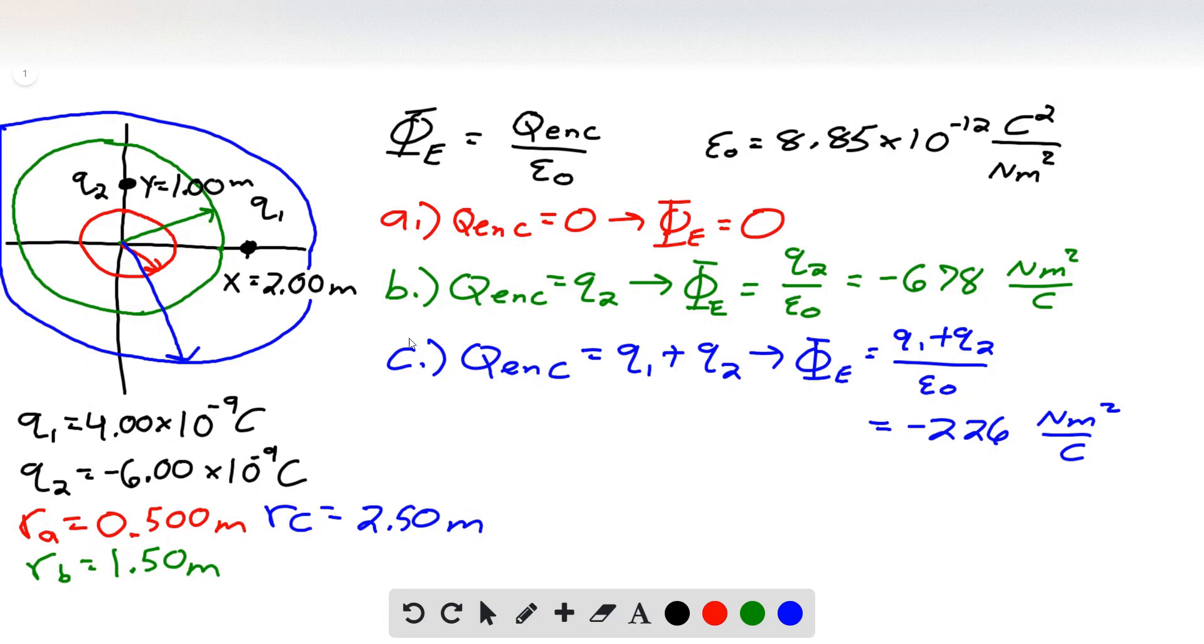And then part C is the total enclosed charge at 2.50 meters. Well, that circle includes both Q1 and Q2, so the total enclosed charge is simply Q1 plus Q2. So the net electric flux is Q1 plus Q2, this total net charge divided by epsilon naught. So we sum 4 times 10 to the negative 9 plus negative 6 times 10 to the negative 9 coulombs. So we have that total enclosed charge divided by epsilon naught gives us negative 226 newton meters squared per coulomb.